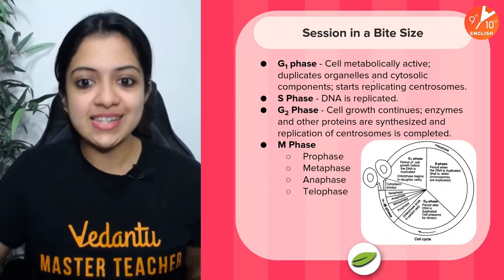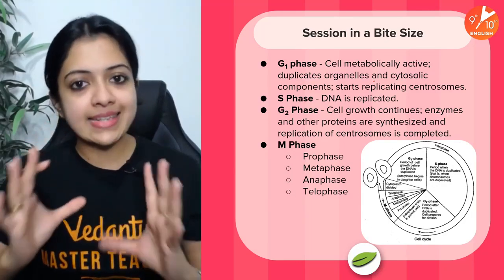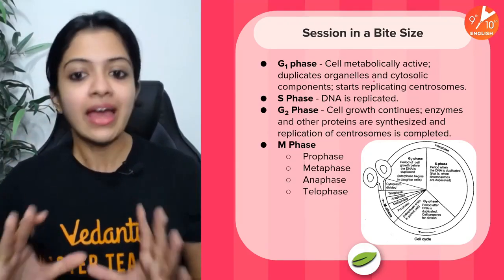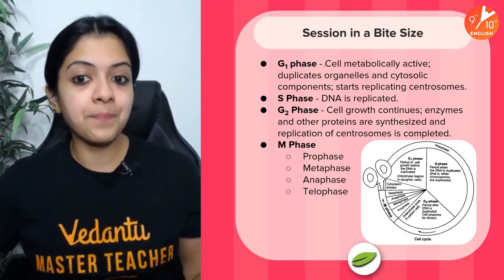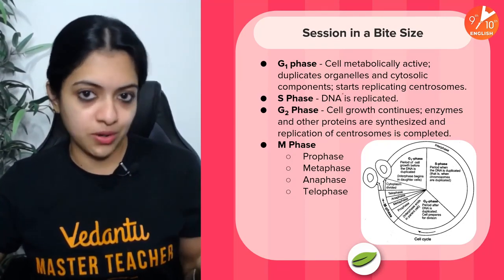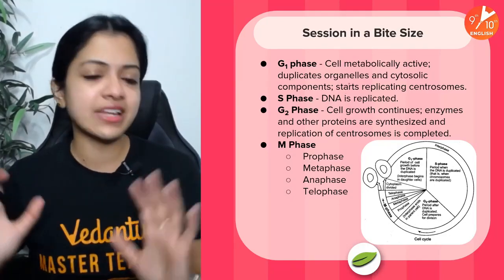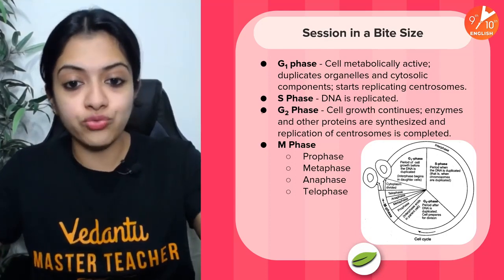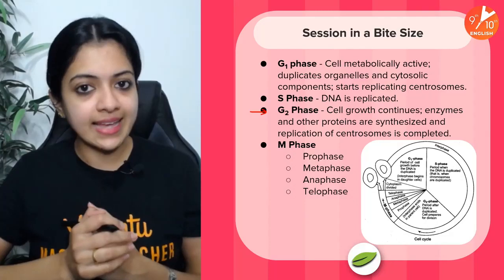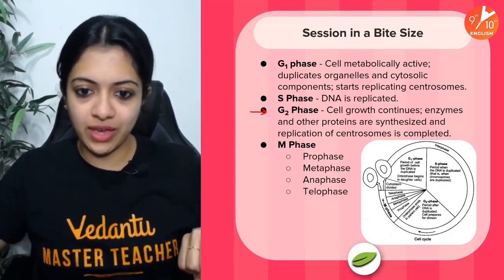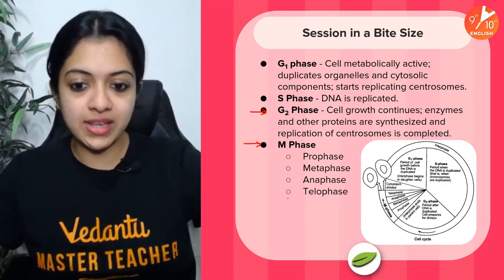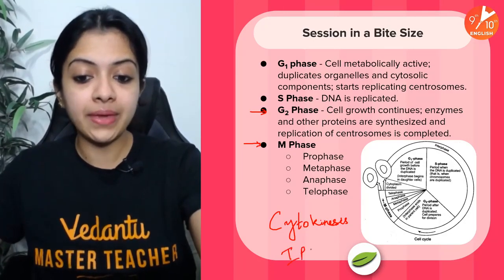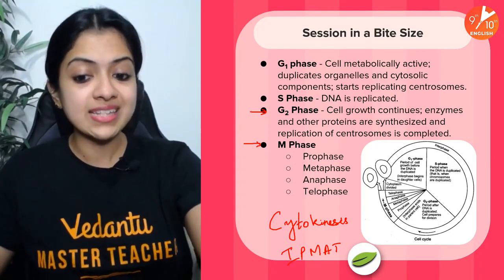In summary: G1 phase — the cell is metabolically active, duplicates organelles, cytoplasmic and cytosolic components, and starts replicating centrosomes — all preparation except DNA synthesis. S phase — DNA synthesis and replication occur. G2 phase — cell growth continues, enzymes and other proteins are synthesized, and the cell is fully prepared to enter the mitotic phase. The mitotic phase is divided into prophase, metaphase, anaphase, and telophase, followed by cytokinesis. Remember the mnemonic: IPMAT — Interphase, Prophase, Metaphase, Anaphase, Telophase — and you can add Cytokinesis after.